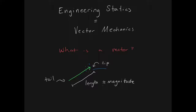One thing that's unique in statics is that the direction is usually split into two characterizations. One is the sense — that's really the orientation of the tip to tail, so in this case the tip is oriented to the upper right as opposed to the lower left. The other part of direction is called the line of action, which is an imaginary line that passes collinear along the same line as that vector.